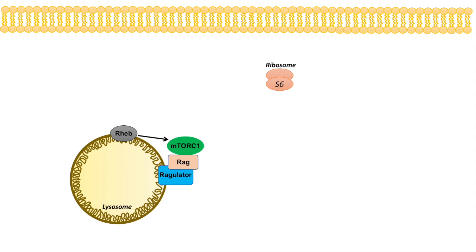Now that we know the complex regulation of mTORC1, what happens when it actually gets activated? One of the most important functions is that mTORC1 phosphorylates and activates P70S6 kinase, or P70S6K. P70S6K is super important for many downstream effects. One of the first things it does is phosphorylate and activate CAD, which is indispensable for pyrimidine synthesis. So one main role of P70S6K is allowing pyrimidine synthesis to occur within the cell.